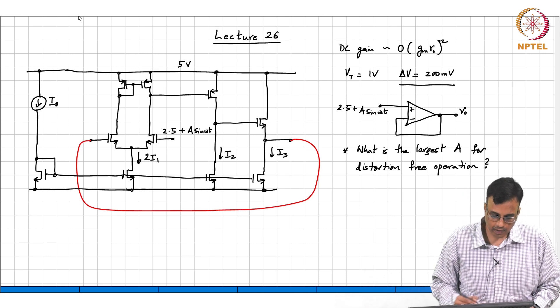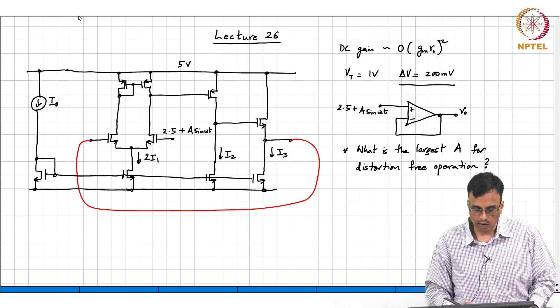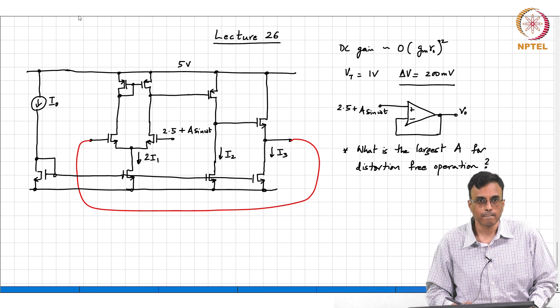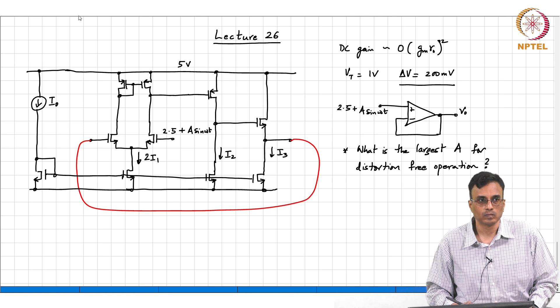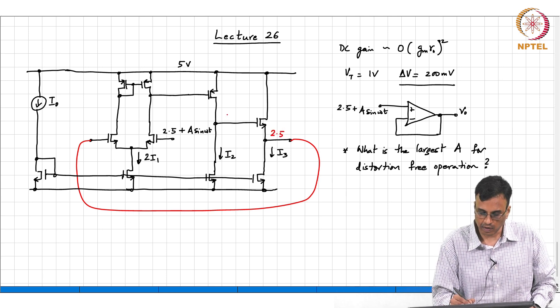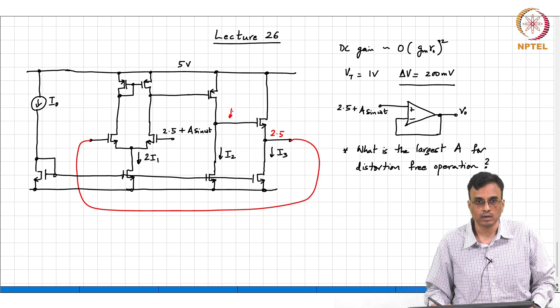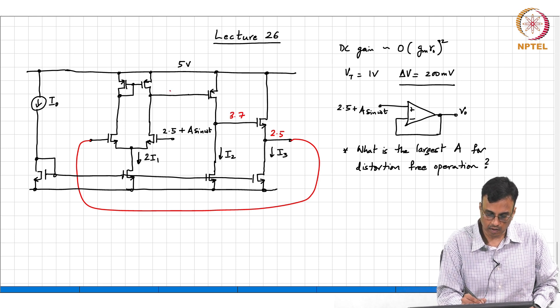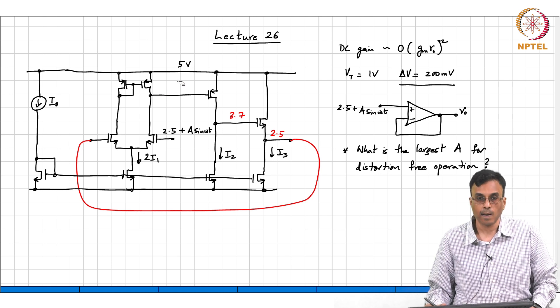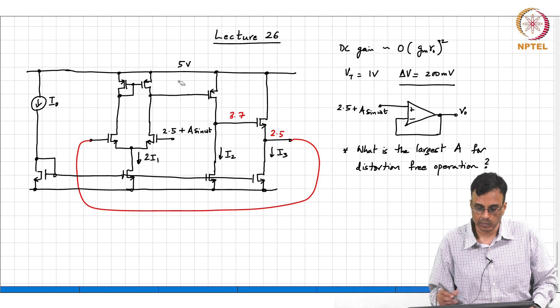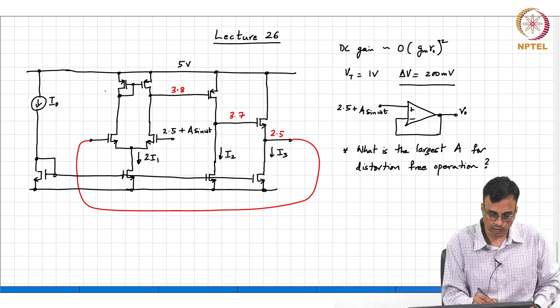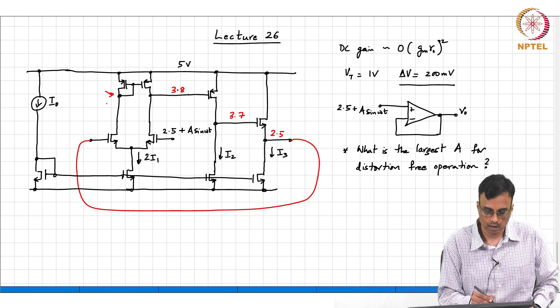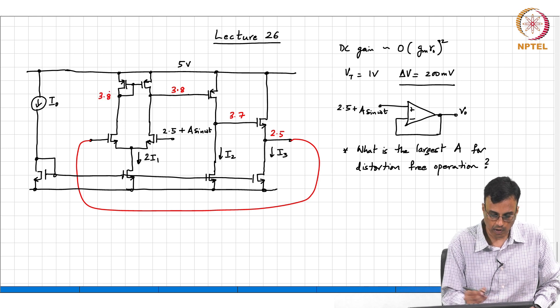All right, quickly let us go through the operating point. When A is 0, what is the output voltage assuming GMRO is very large? So, this voltage is 2.5, what is this voltage? 3.7. What about this voltage? That is 5 minus 1.2 which is 3.8, what is this voltage? 3.8.